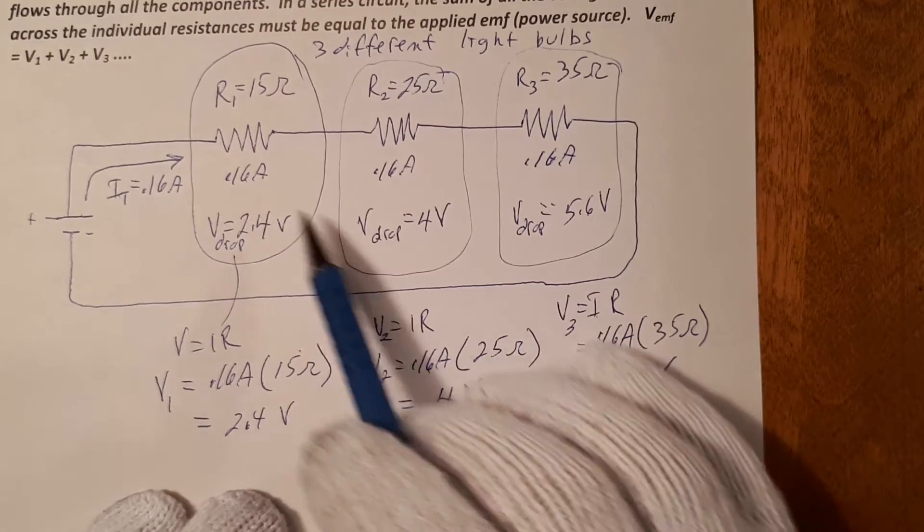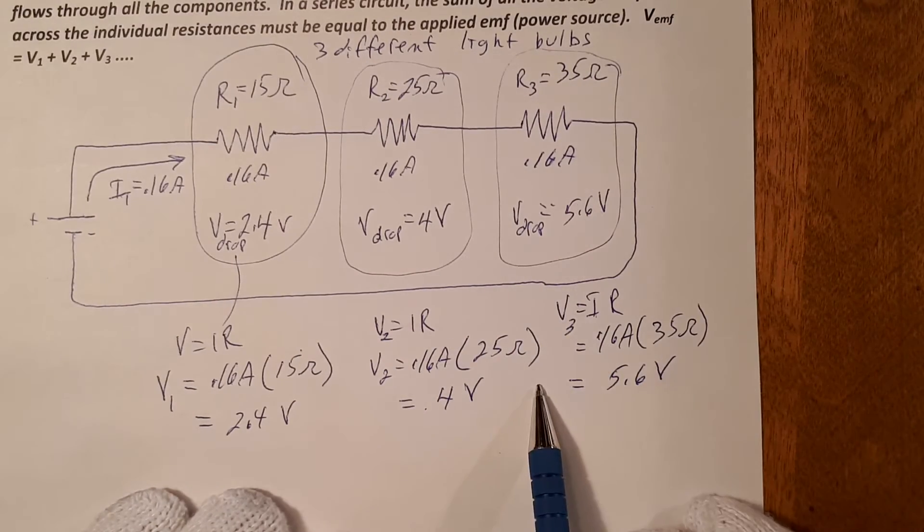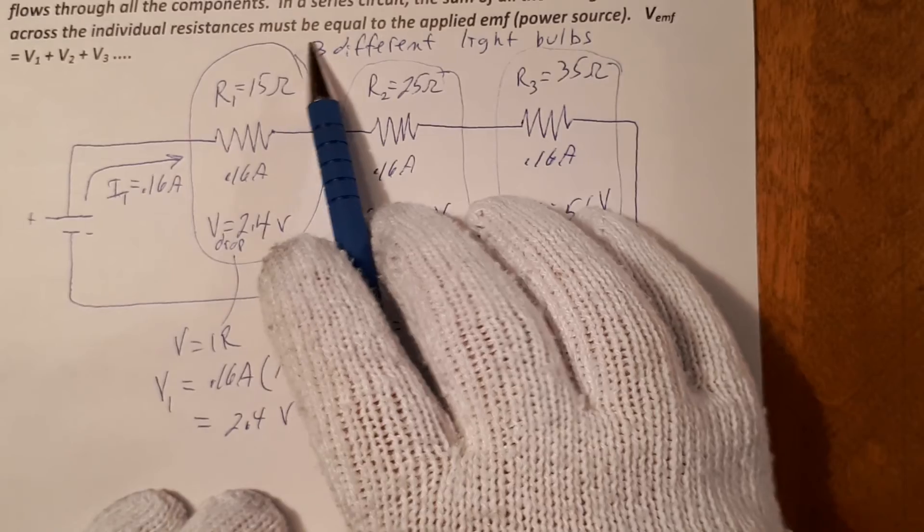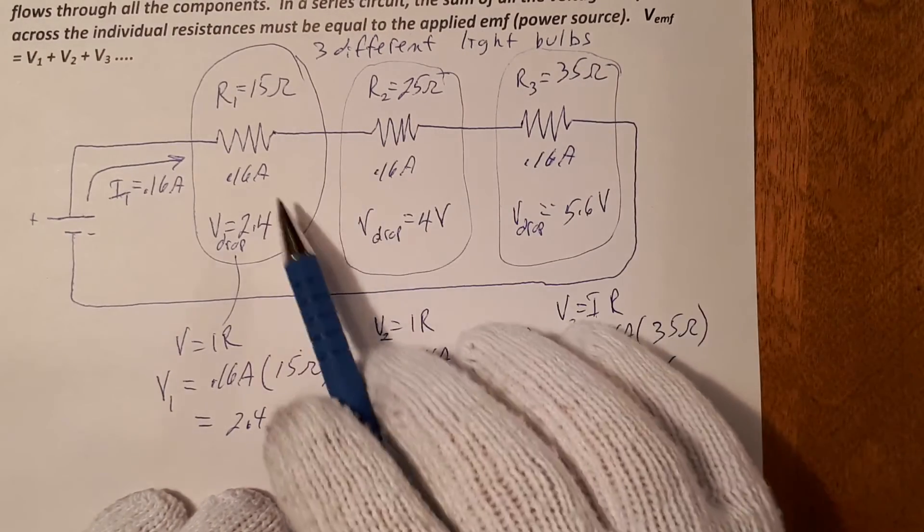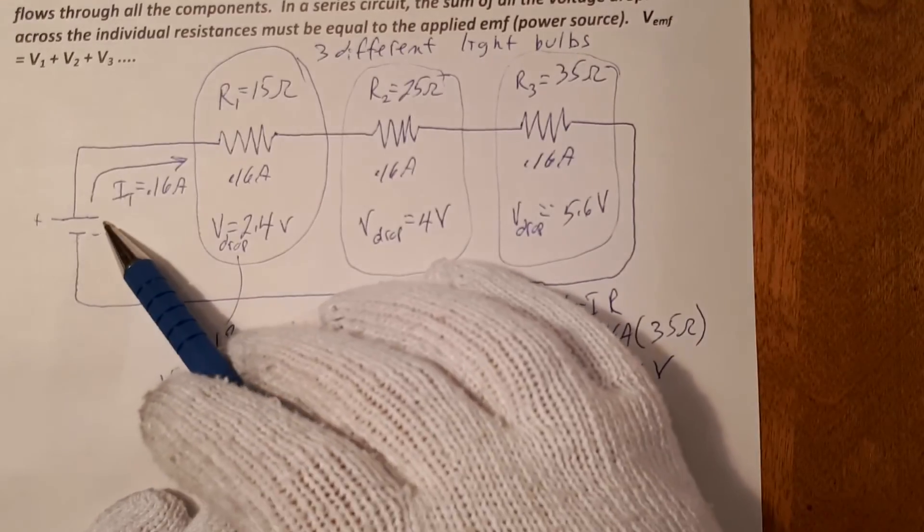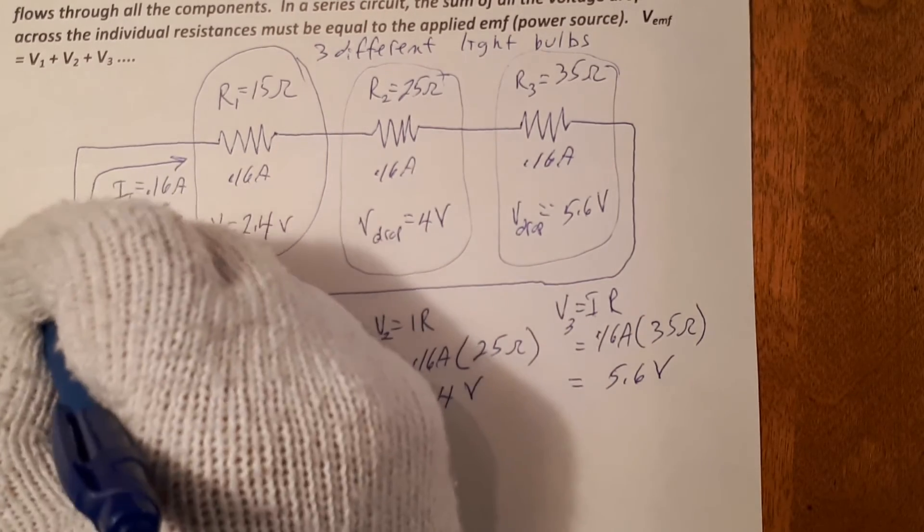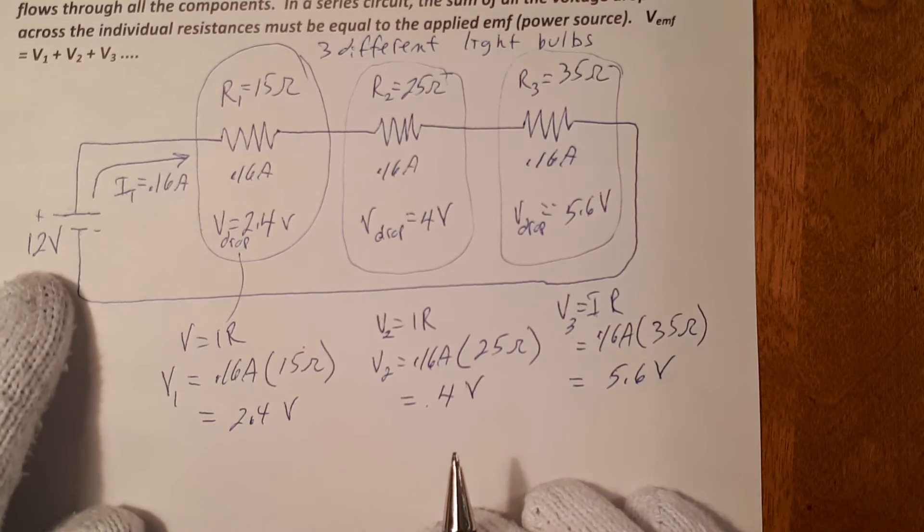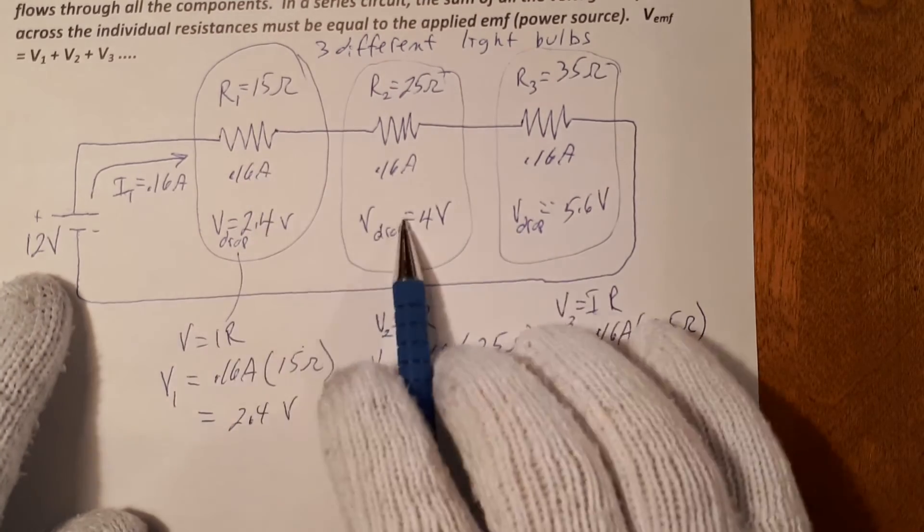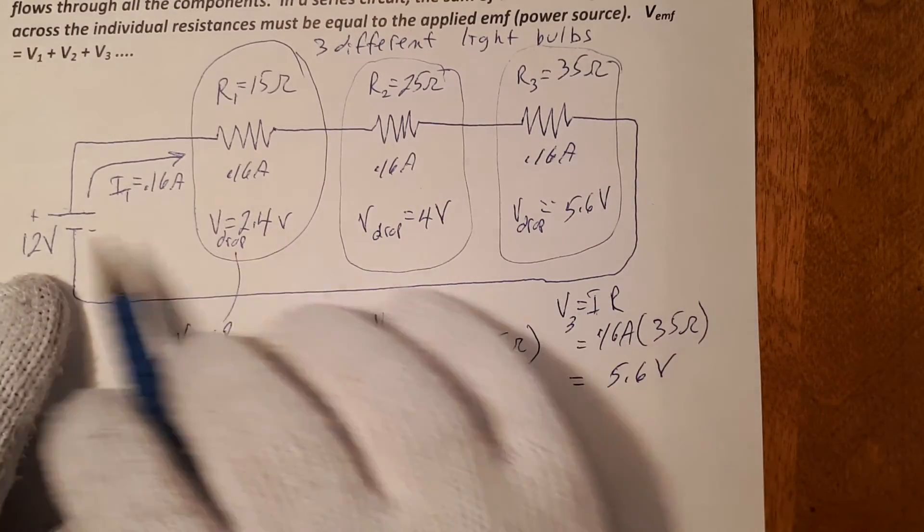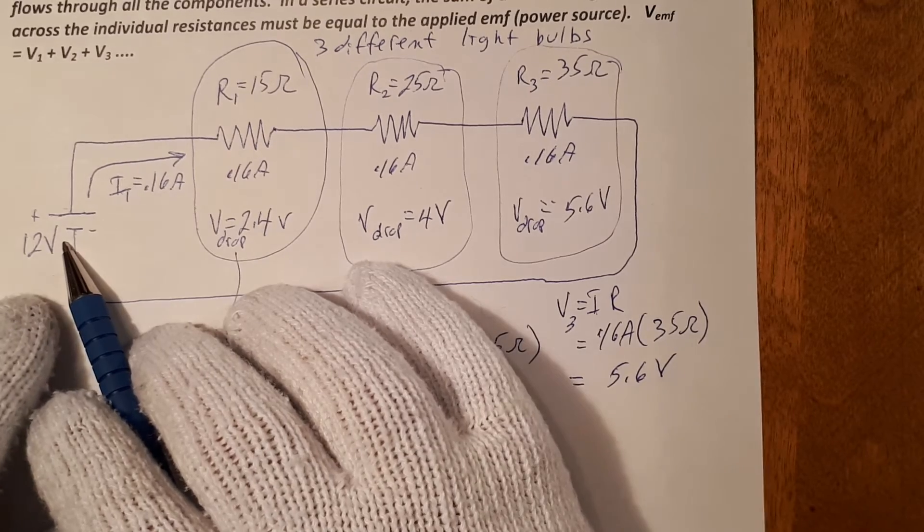However, it also says here that must equal the applied EMF. The summation of all of these voltage drops must equal what was the original supplied voltage, and this was 12 volts. So the battery is 12 volts. And all of these voltage drops, which we calculated separately, must equal the applied voltage, the applied EMF.